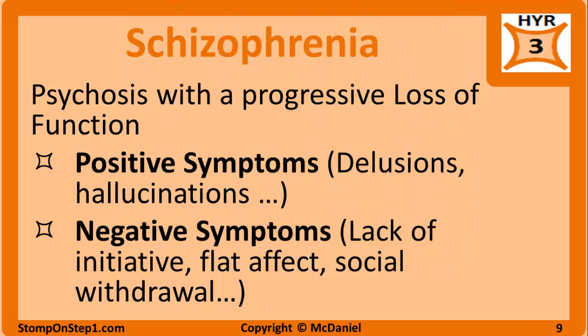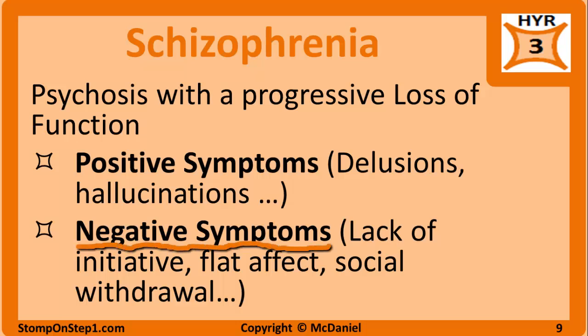Schizophrenia is a chronic progressive psychiatric condition characterized by psychosis and an abnormal interpretation of reality. They have a difficult time functioning in society due to progressive loss of function. Symptoms are categorized into two groups: negative and positive symptoms. Positive symptoms are behaviors or sensations that are not normally present and may be related to an excess of dopamine. Examples include hallucinations, delusions, catatonia, and disorganized speech or behavior.